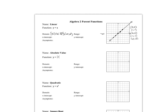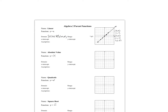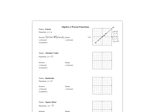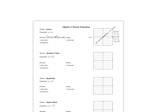Now let's talk about range. The range of our graph is looking from bottom to top. If we think about collapsing this line onto the y-axis, it would cover every y value up and down. So our range is the set of all y values such that y is an element of all real numbers. In interval notation, that's negative infinity to positive infinity.